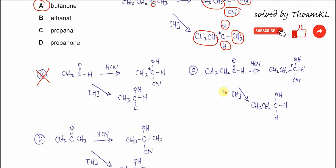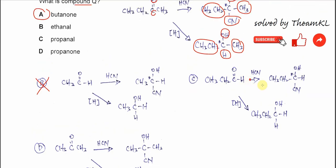For C, we have propanal. After propanal reacts with HCN, it will form this cyanohydrin. It will also produce one chiral center here.